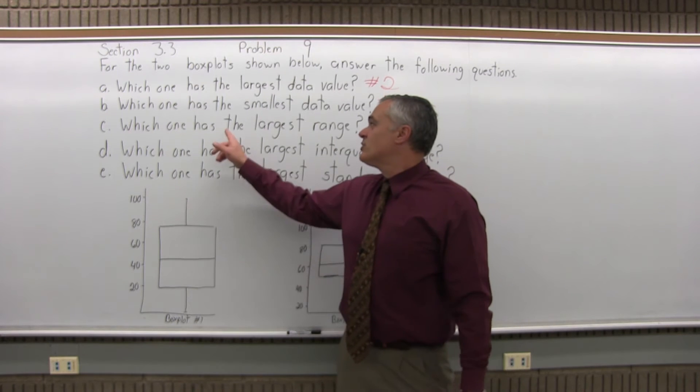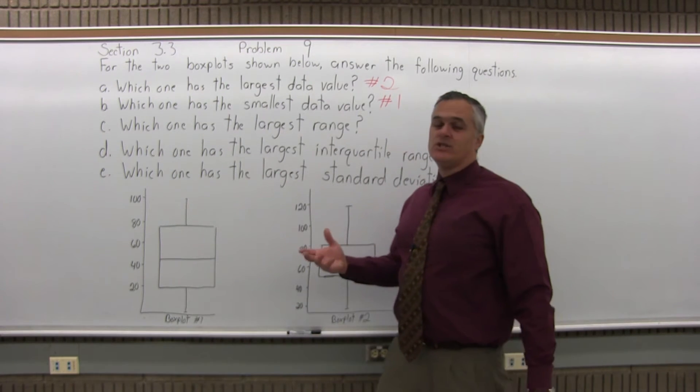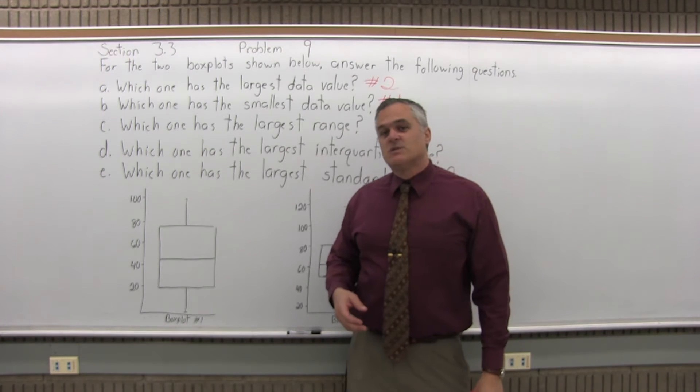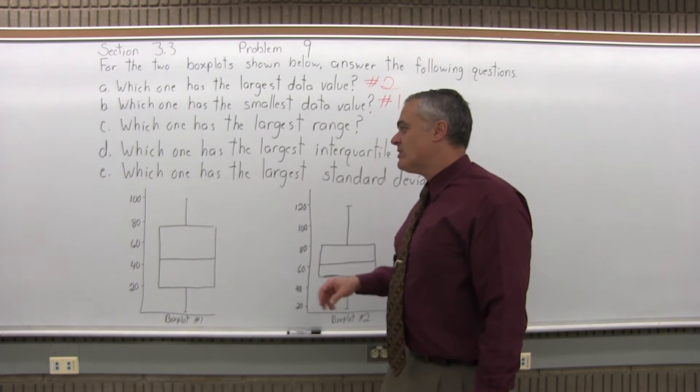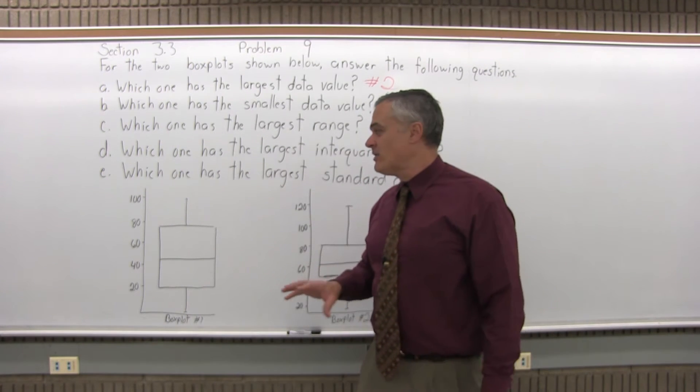And which one has the largest range? So the range is the biggest data value minus the smallest data value. And it's pretty close. They both look like they're about 100.